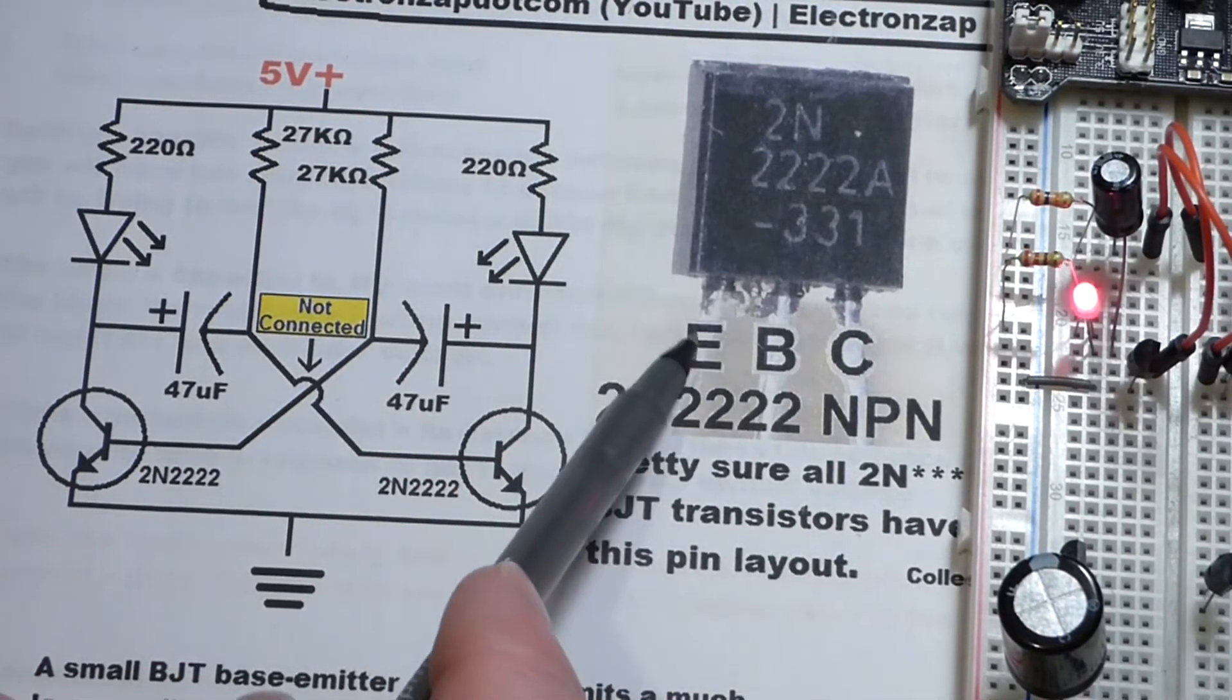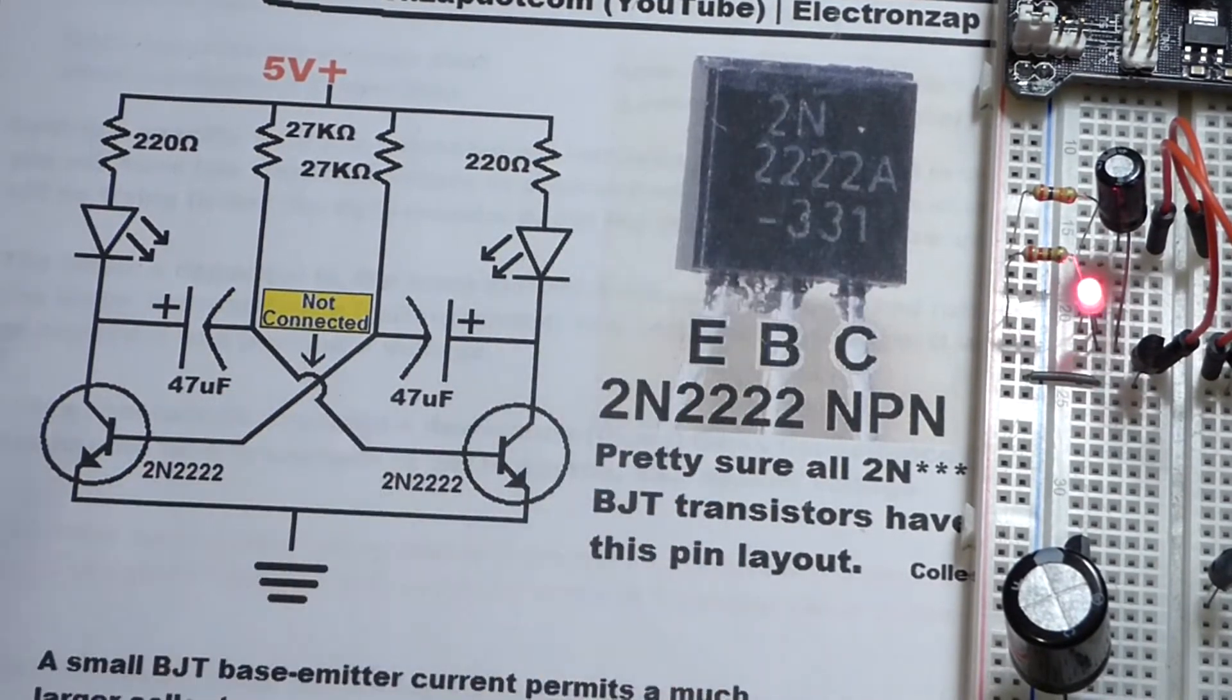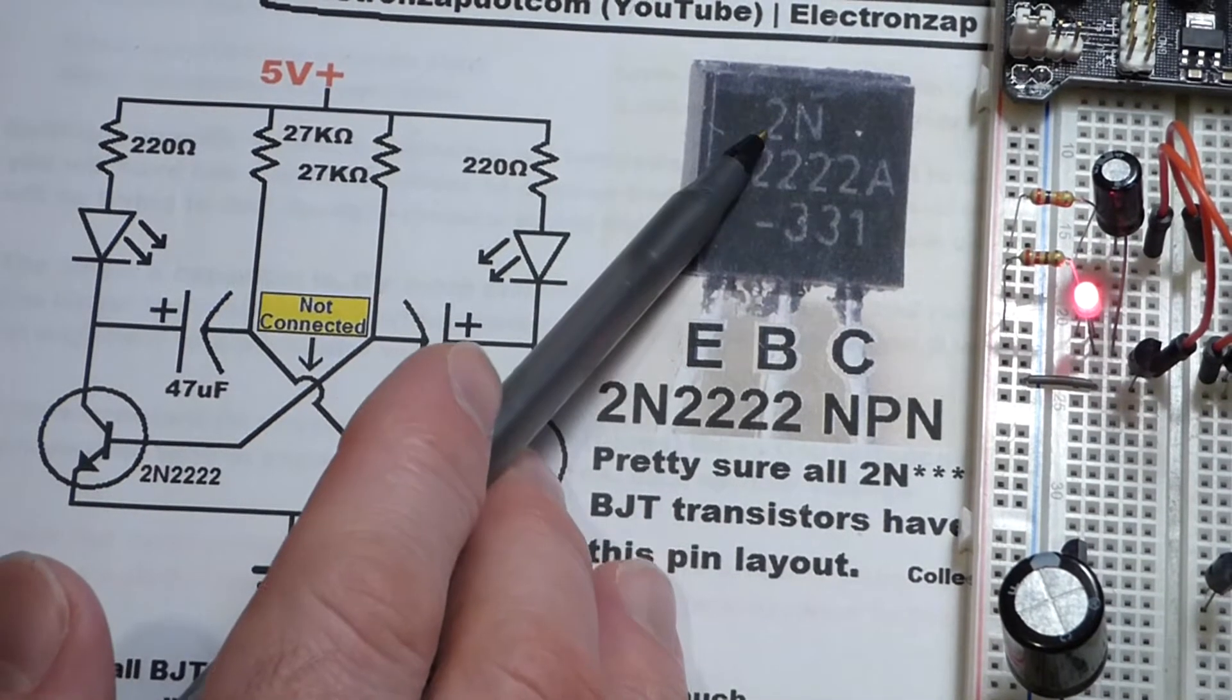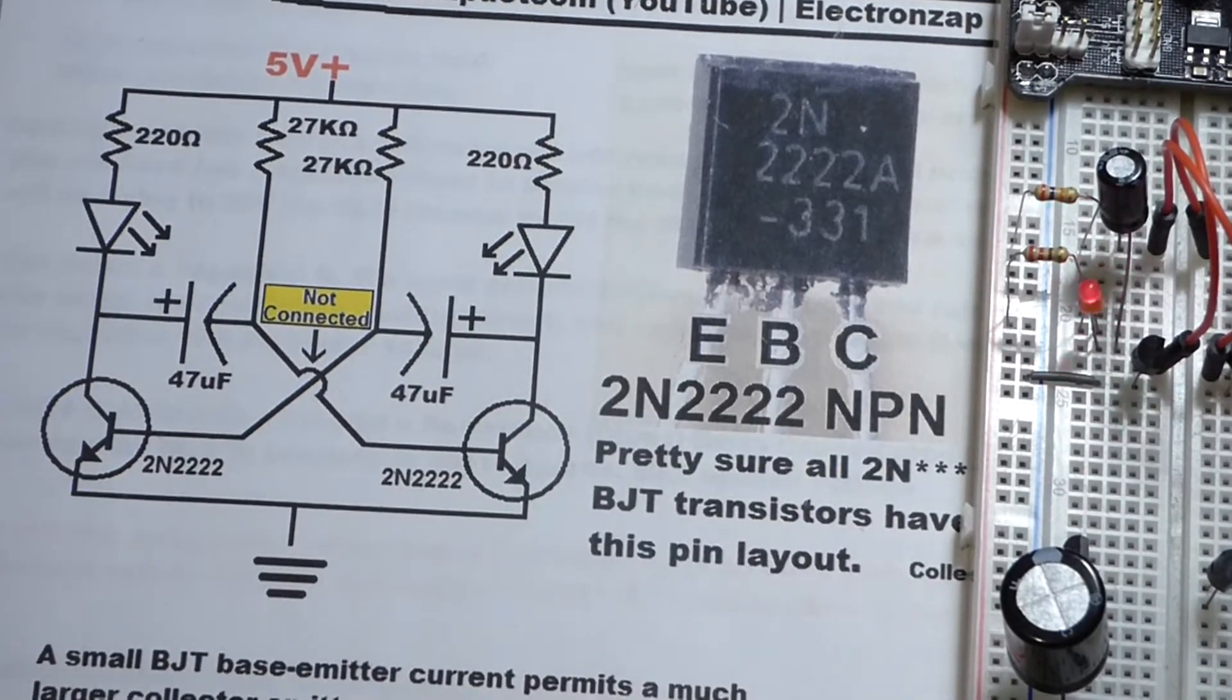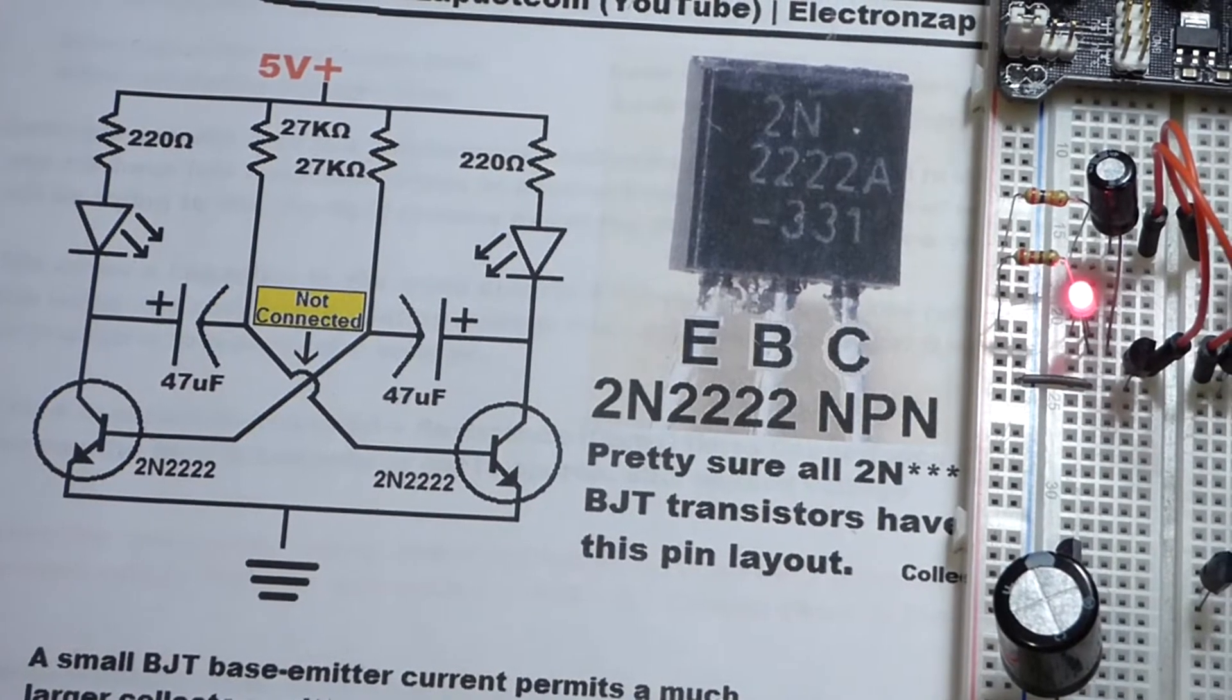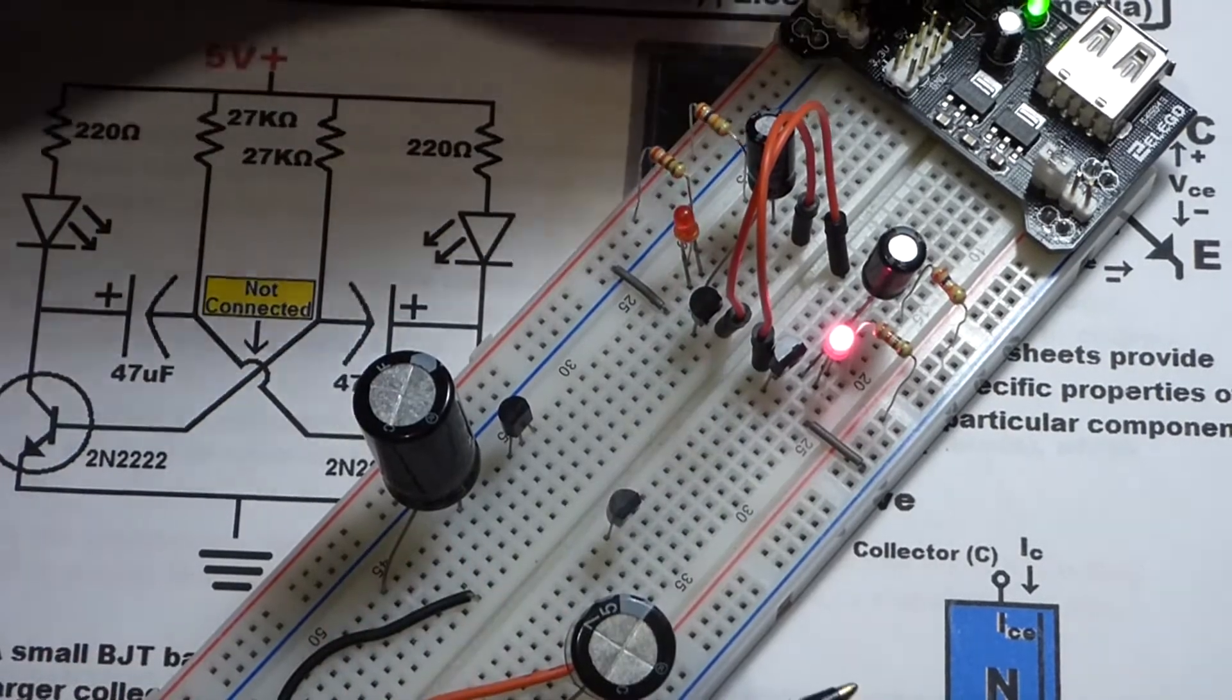So looking at the flat side, left one's emitter, middle one's base, right side's collector, exactly like the 2N2222. And as I said, it's also an NPN. I believe all transistors that start with 2N have this pin layout. And I think they're all bipolar junction transistors. But in any case, what we're going to do, we're going to swap these two transistors out.